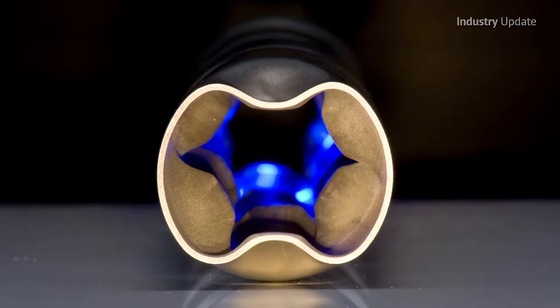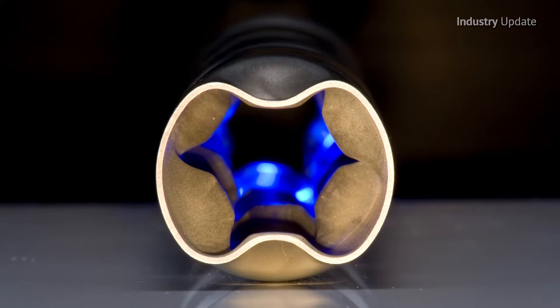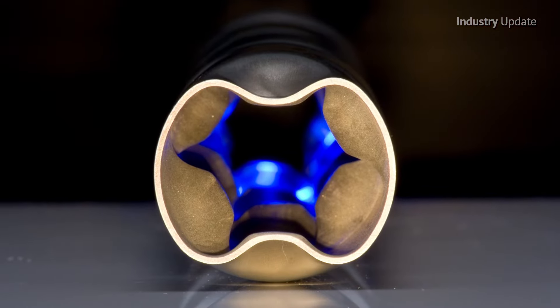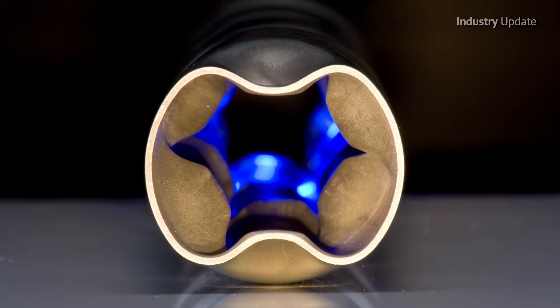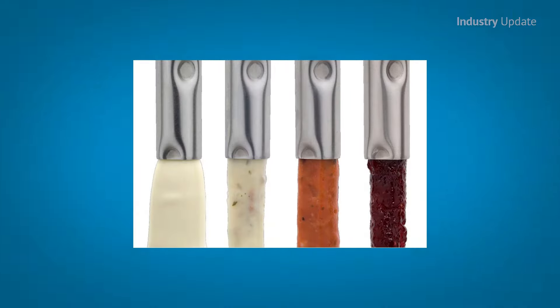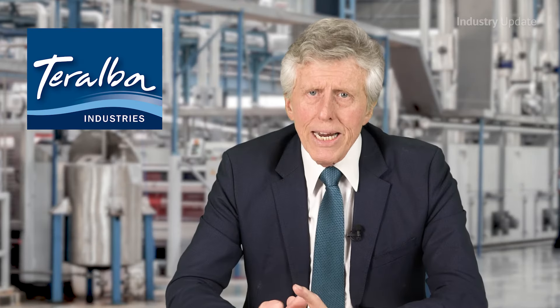The Dimple Profile is used to increase turbulence in the product and service media. This turbulence results in a high heat transfer coefficient, even when processing viscous products such as slurries and sludge. A clear drainage passage in both the product and service channels provides the ultimate in hygiene, achieved by the unique arrangement of the Dimple Profiles.